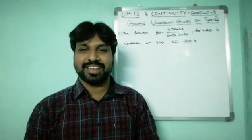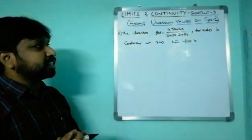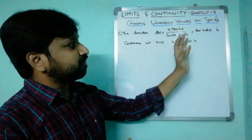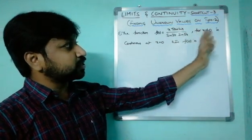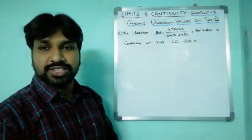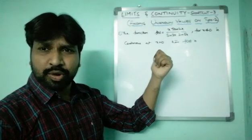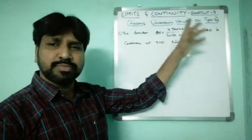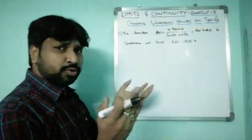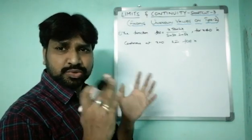This is shortcut number 3. Question number 1: the function f(x) equals x·tan2x divided by sin3x·sin5x, and for x not equal to 0, it is continuous at x = 0. Then f(0) equals what? You can identify this is type 2 — there is absolutely type 2.